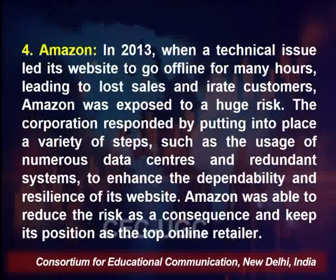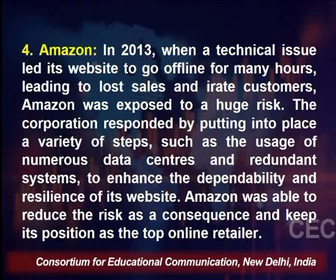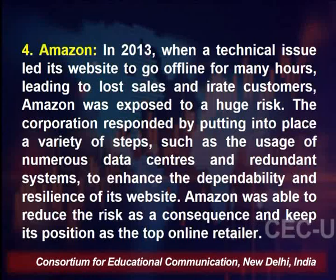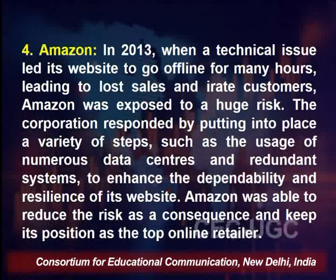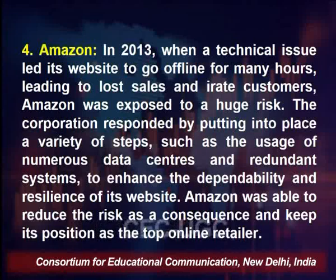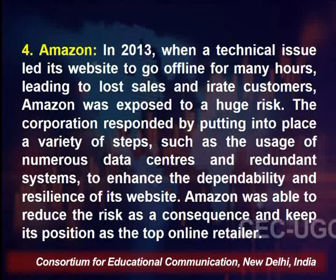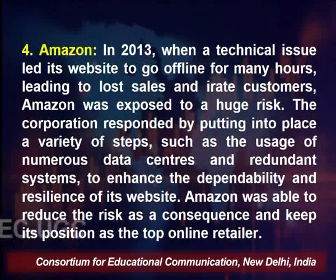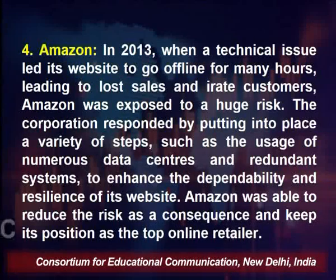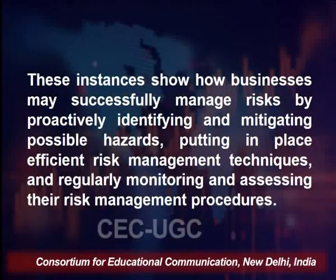Next is Amazon. In 2013, when a technical issue led its website to go offline for many hours, causing lost sales and frustrating customers, Amazon was exposed to a huge risk. The company responded by putting into place a variety of steps, such as the usage of numerous data centers and redundant systems to enhance the dependability and resilience of its website. As a consequence, Amazon was able to reduce the risk and keep its position as the top online retailer.